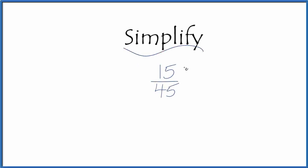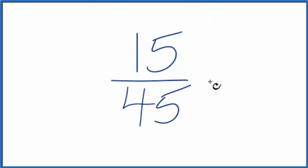Let's simplify the fraction 15/45. We want to find a fraction that's equivalent, with the same value, but reduced to lowest terms. We need to find a common multiple of both 15 and 45.